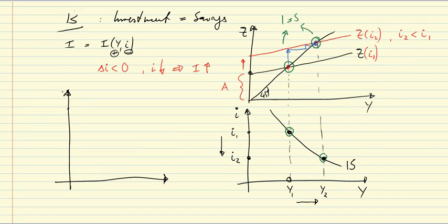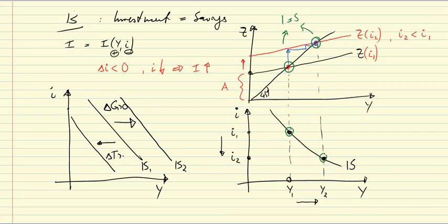Briefly, we'll consider the first example of policy here. The IS curve can be shifted to the right with, for example, an increase in government expenditures. It would be shifted to the left with an increase in taxes. So we can read that for any given interest rate, higher government spending leads to higher output. That's how we read the shift. So for a given interest rate, we get output.